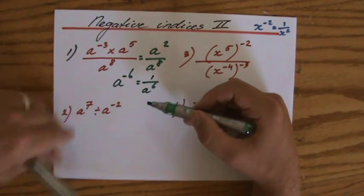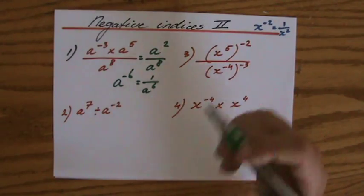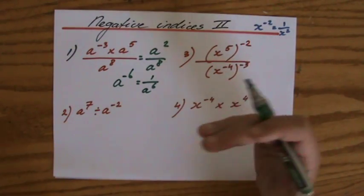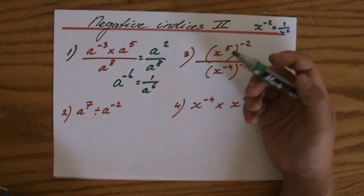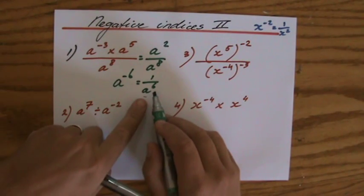So a to the power minus 6, and then a to the power minus 6 is the same as 1 over a to the power positive 6. It depends on the question. Perhaps I will ask you to write your answer in positive index notation, then you have to make sure you write it as a fraction.